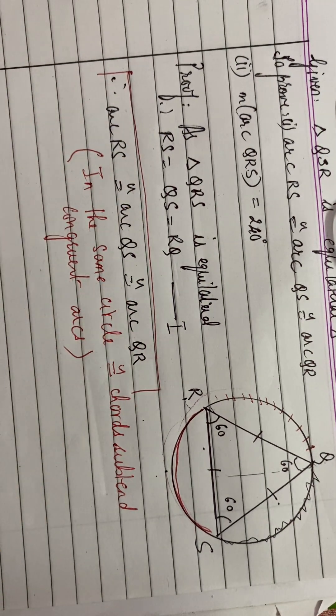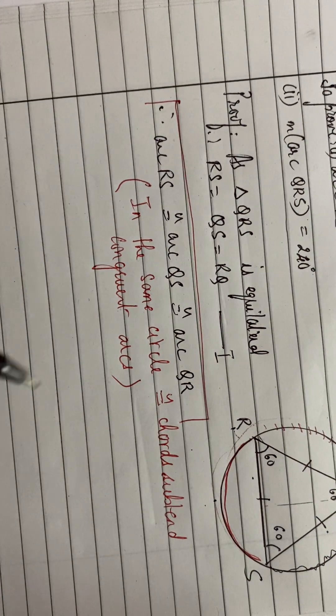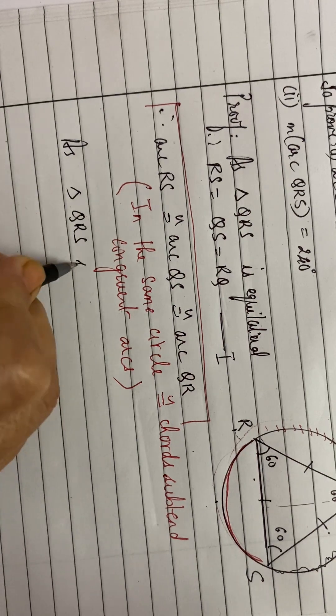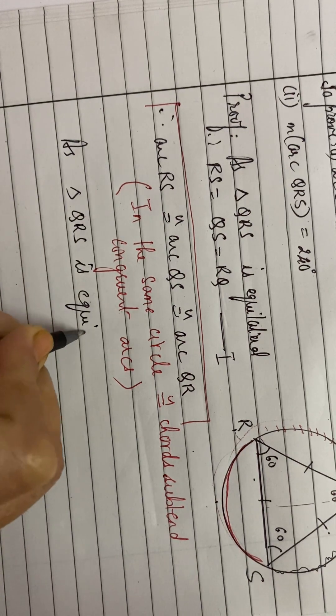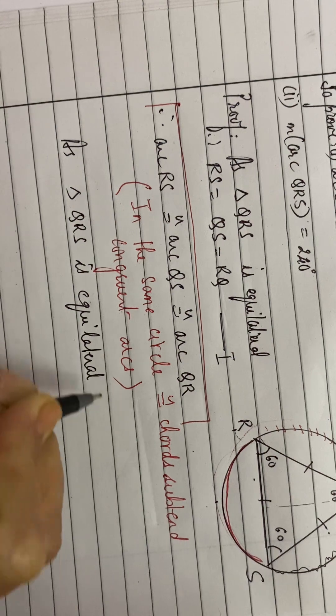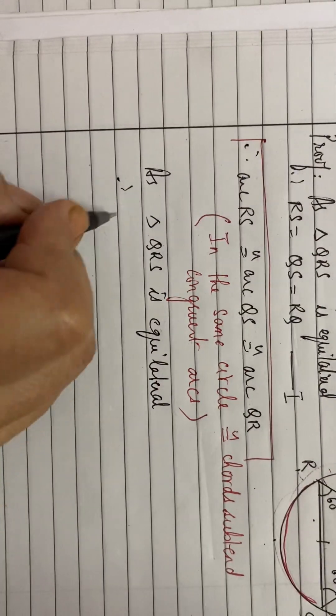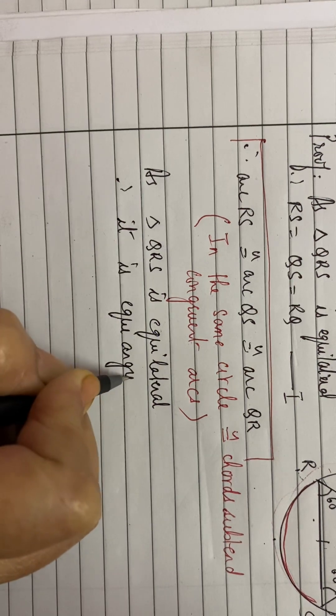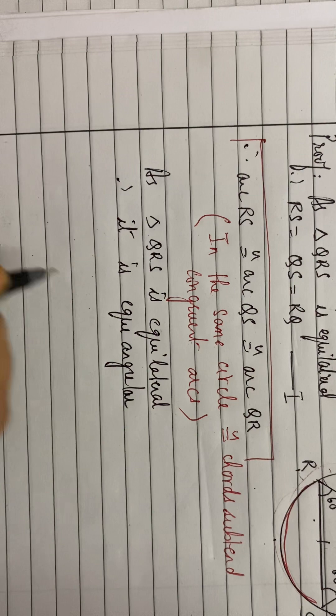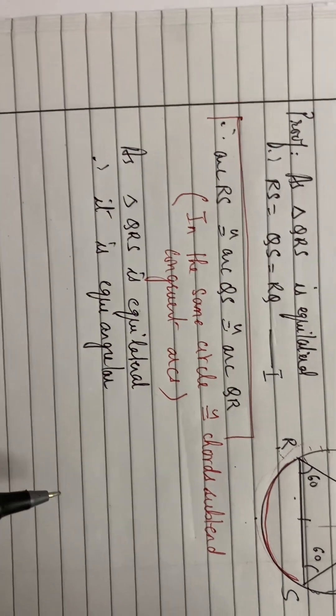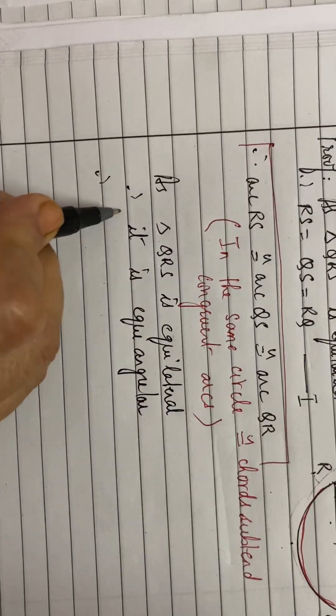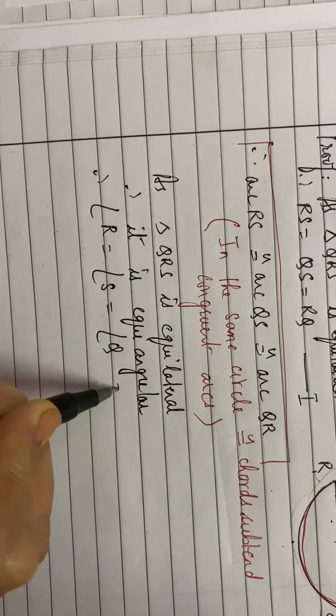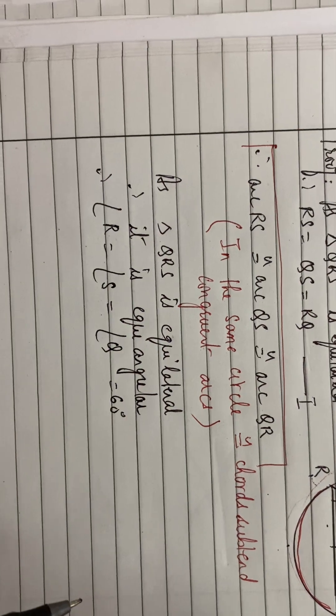Now we come to the second one. As triangle QRS is equilateral, therefore it is equiangular. Equiangular means having same measures. Angles are same. Therefore...